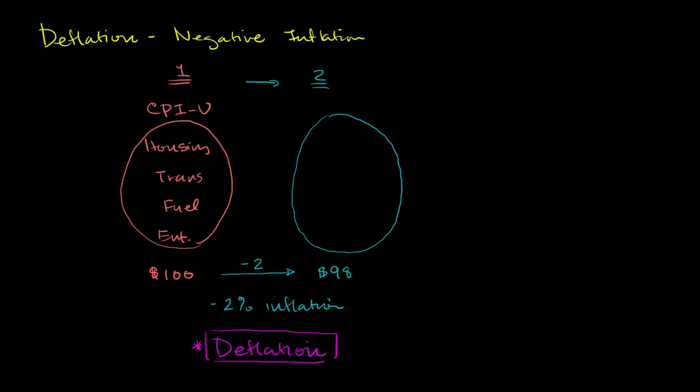The main reason why economists really don't like deflation, or I should say in particular, why central bankers really don't like deflation, is that it makes it much harder to control the economy, or to fuel the economy with interest rates alone, or actually just with printing money alone.